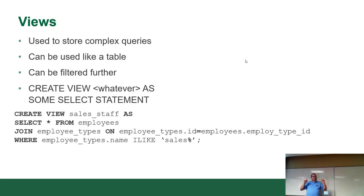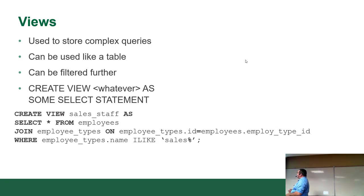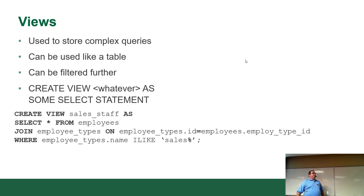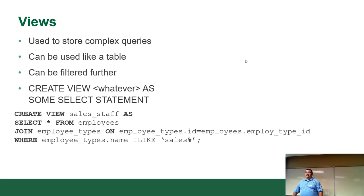Except you can't index a view directly — it respects the indexes behind the scenes but you cannot create new indexes on it. The syntax is straightforward: CREATE VIEW, give it a name, AS, followed by an SQL SELECT statement. For example, you could store a complex join query as a view called 'sales_staff', and then just do SELECT * FROM sales_staff to execute that long query.